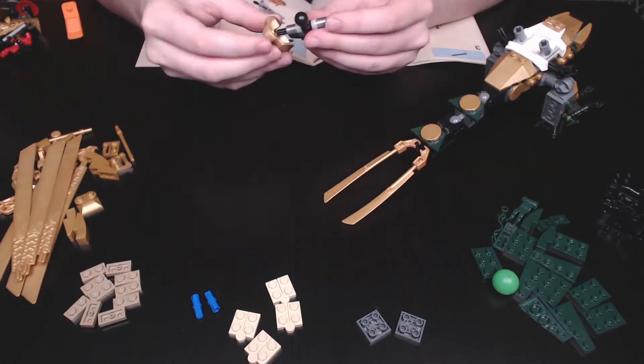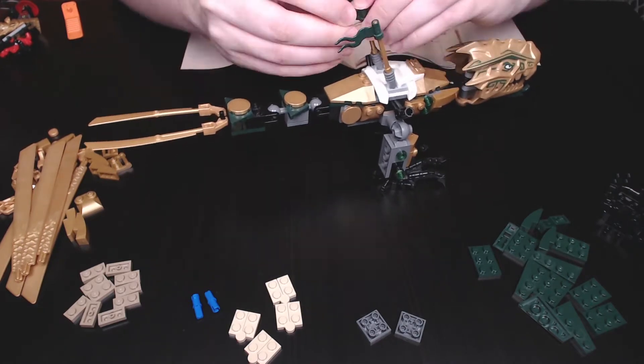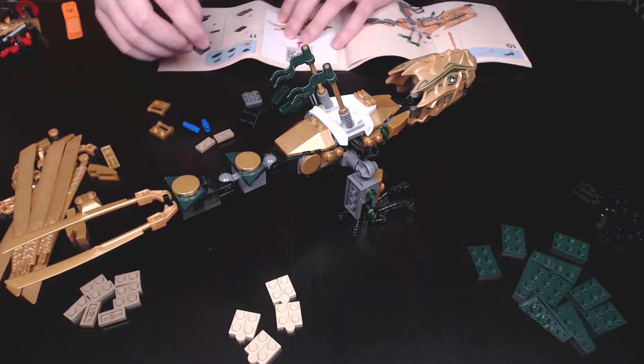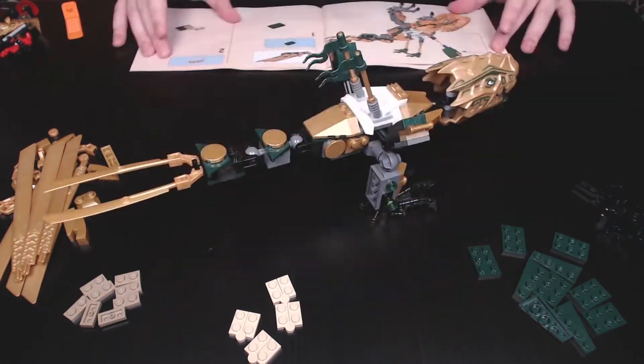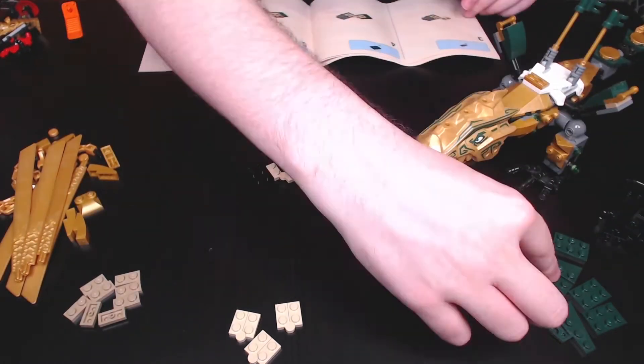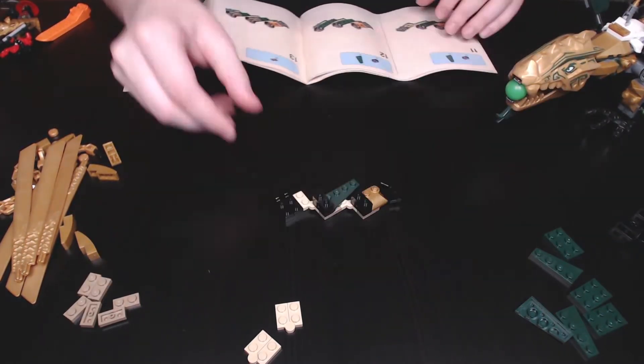But speaking of other sets, this actually has two different forms that take place. One being a mini version of the Dragon that was made for LEGO Dimensions, 71239 Gold Ninja Fun Pack. And the other version is a Ninjago Legacy set, 7666, the Golden Dragon.